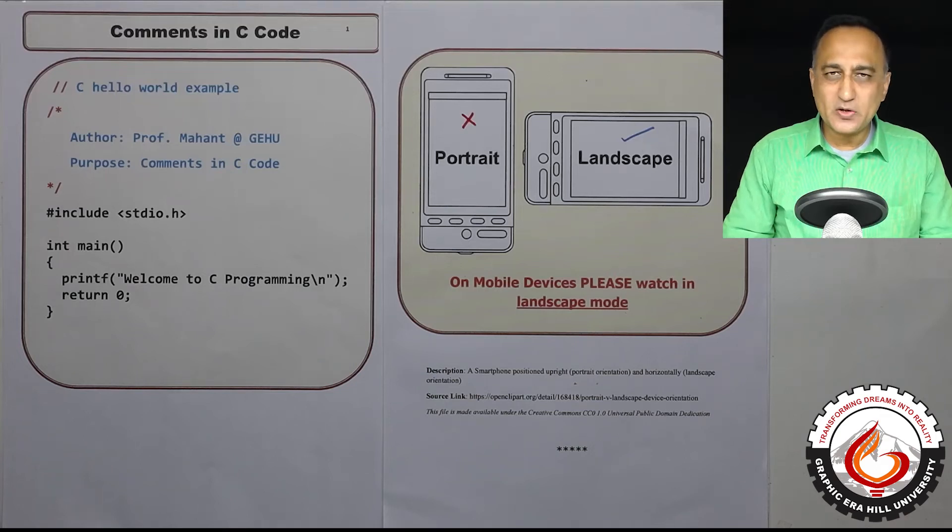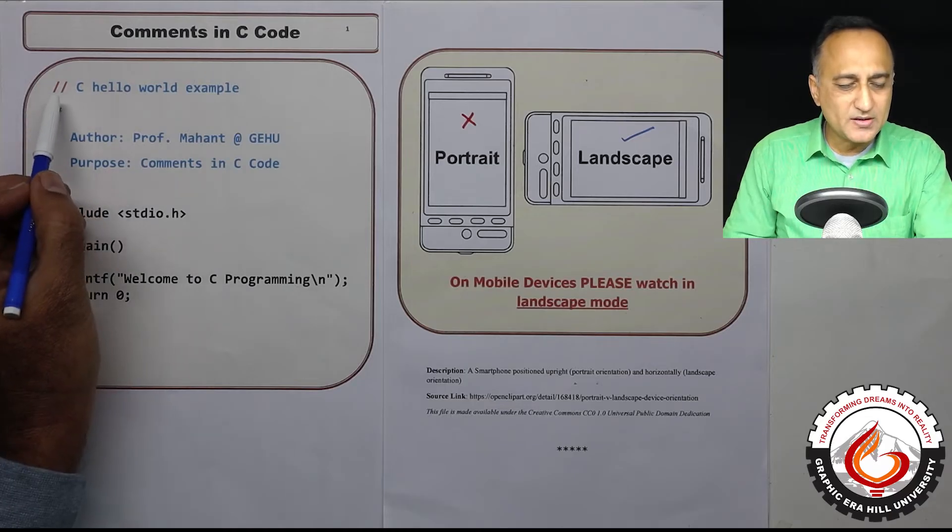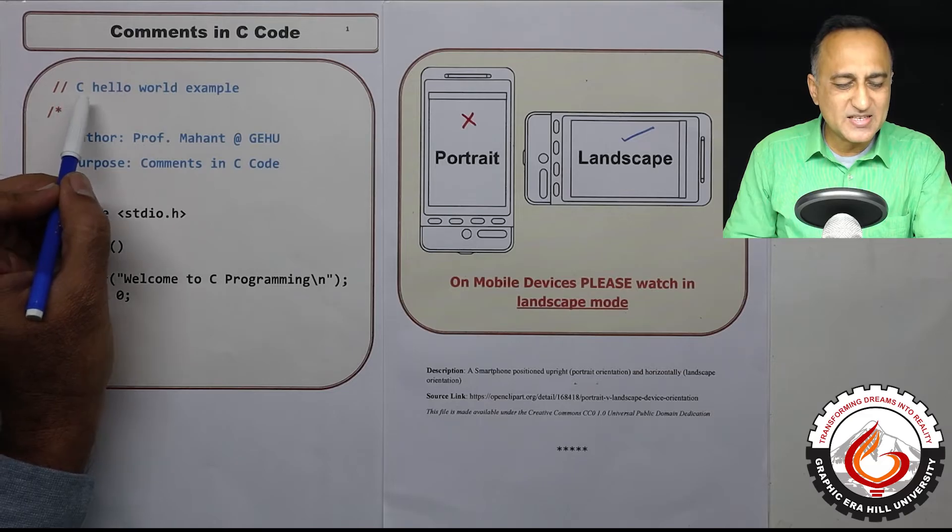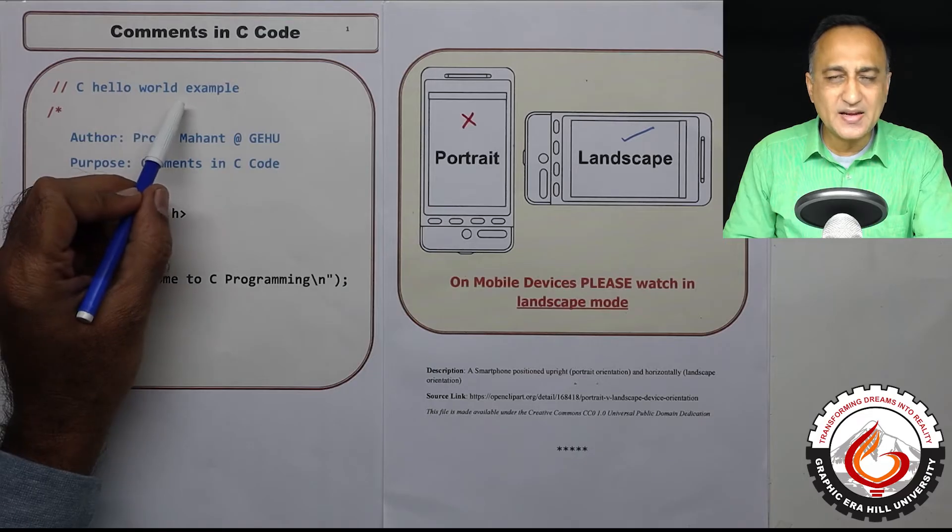Comments in a C code or C program. We basically use two types of comments in C code. The forward double slash, two slashes together, is an example of a single line comment. That means anything written on this particular line is not considered to be part of your code.